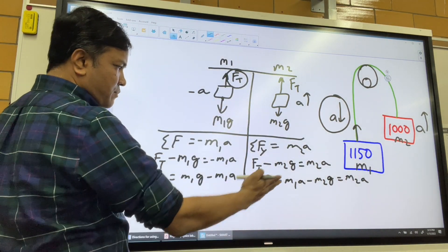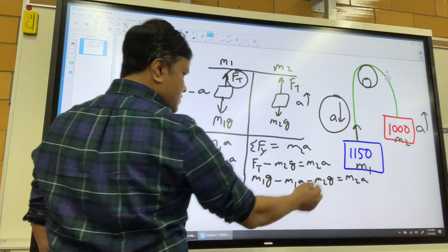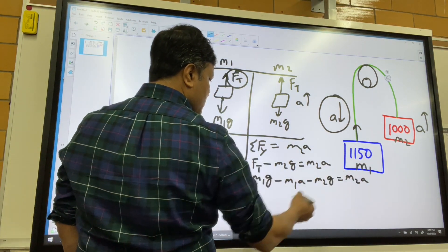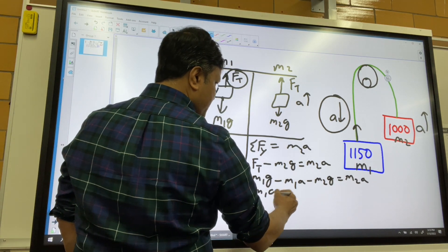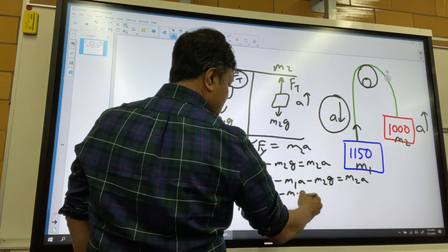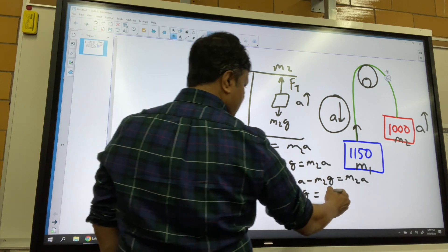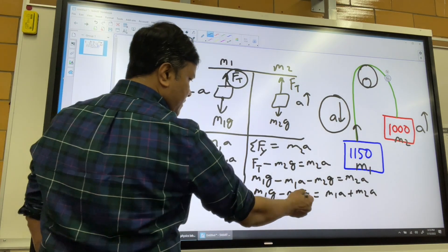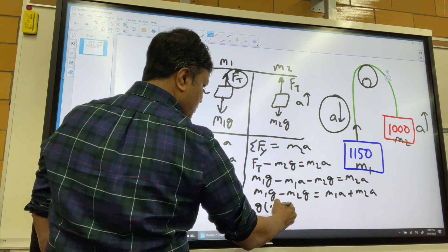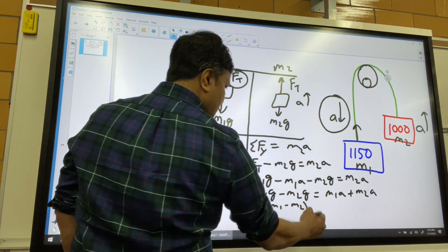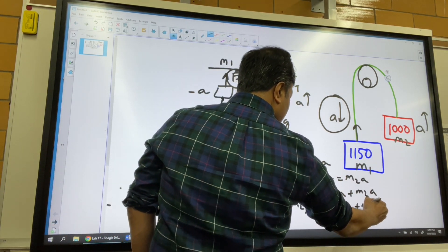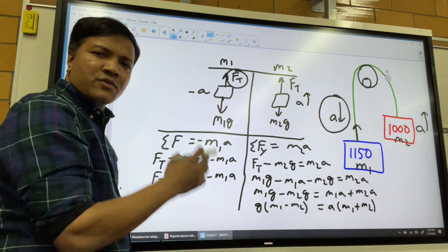Let's see if we can isolate and put all the A together. I'm going to send M1A to the other side. So M1G minus M2G is equal to M1A plus M2A. I have common factor G: M1 minus M2. I have common factor A: M1 plus M2. And this is the equation for the elevator.